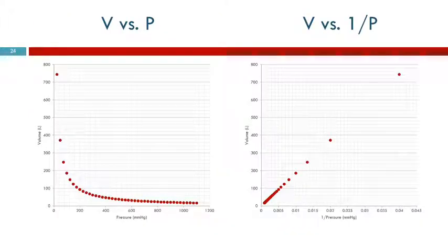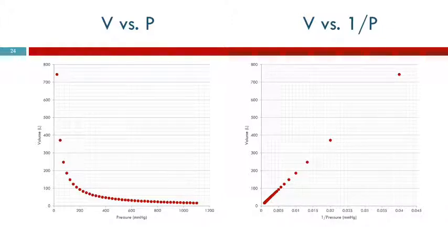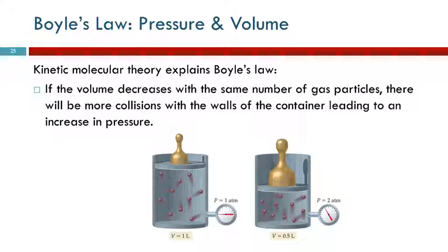You can go through the math to figure out how they derive P1 V1 equals P2 V2, but most students aren't that interested, so I'm happy to show you but won't use lecture time for it. Boyle's law says if you increase the pressure you decrease the volume and vice versa. Kinetic molecular theory explains why this happens.